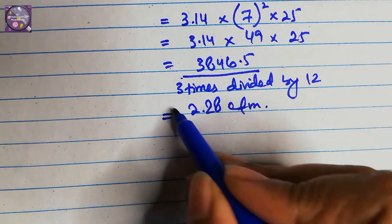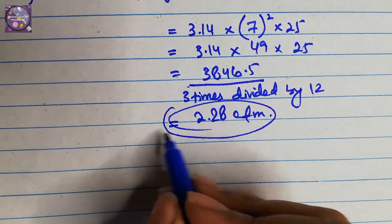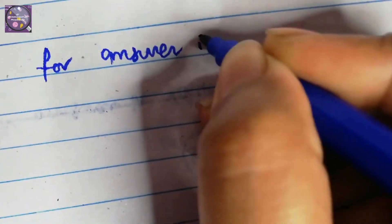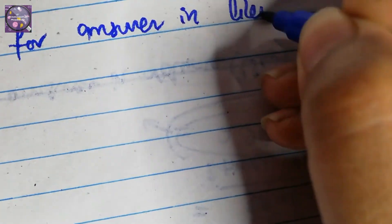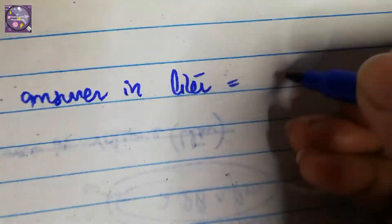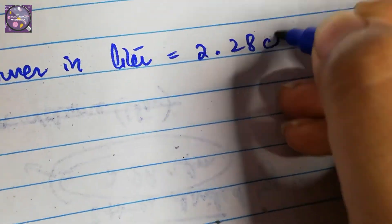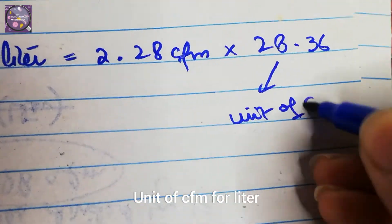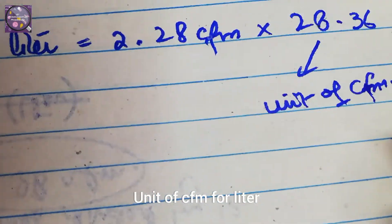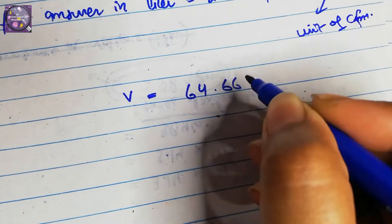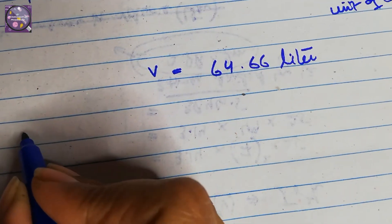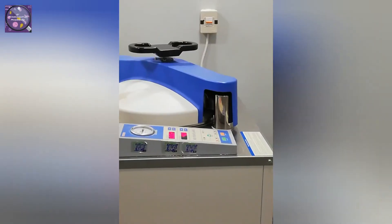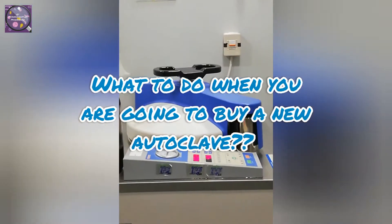The answer comes out in CFM. Now we want the answer in liters, so we convert: 2.28 CFM multiplied by 28.36 — where 28.36 is the unit conversion factor for CFM to liters. The answer is 64.66 liters, which means the volume of our autoclave is approximately 65 liters.